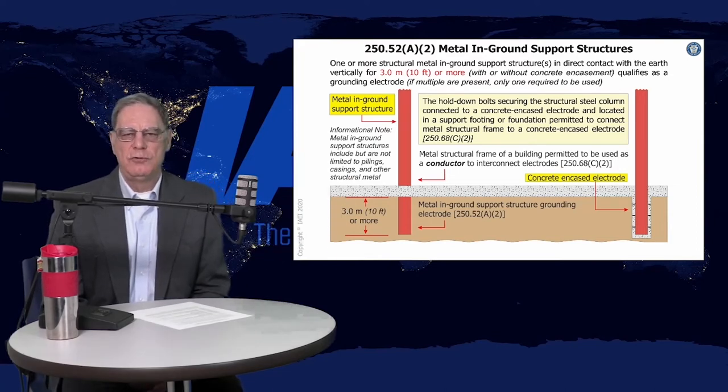For the in-ground support structure, 10 feet or more in the ground, it could be a grade-driven piling, or it might be concrete encased down there, such as you might have a casing or piling that's concrete encased.